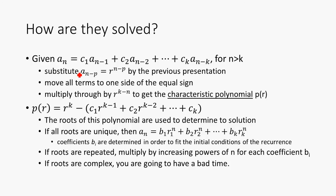So how are they solved? Given this recurrence here, we just substitute a_(n-p) for r^(n-p) in the previous occurrence. Then we move all the terms to one side of the equal sign and we multiply through by r^(k-n) to get the characteristic polynomial.